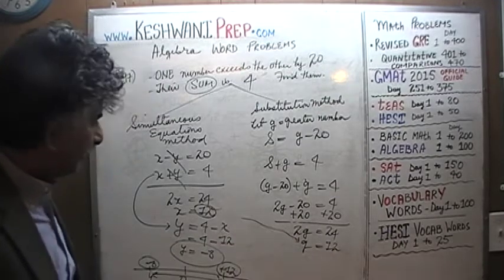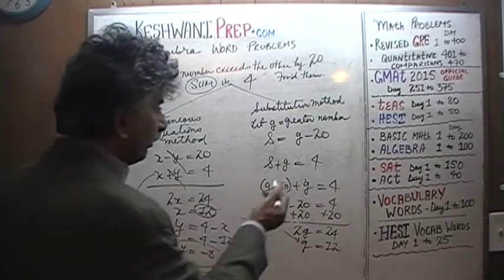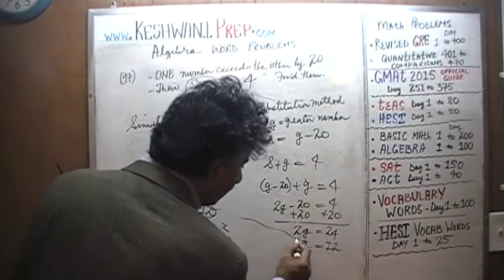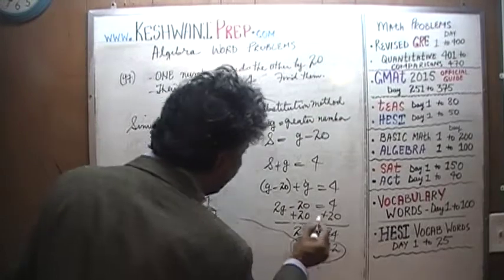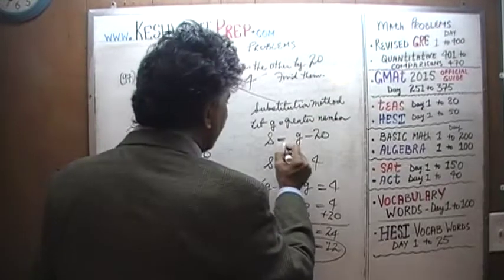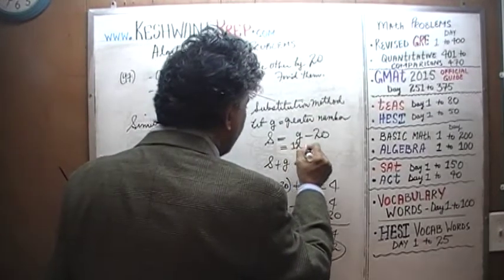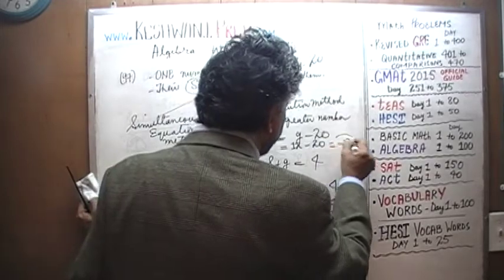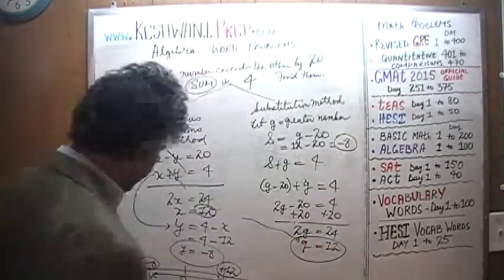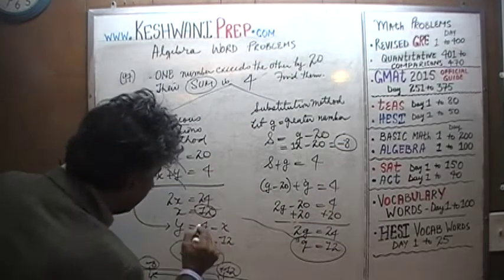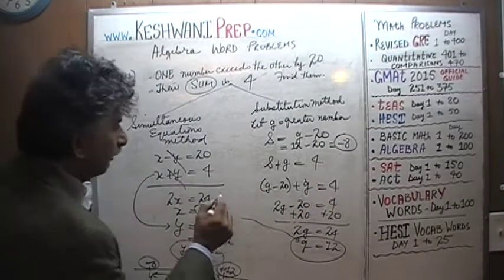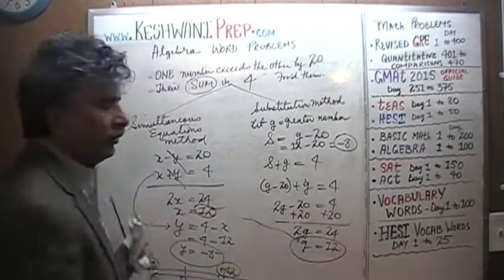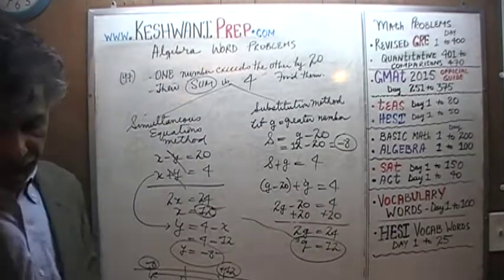G equals 12 is the greater number. The smaller number is G minus 20, which is 12 minus 20, giving us negative 8 — just like before. So the greater number is 12 and the smaller number is negative 8.